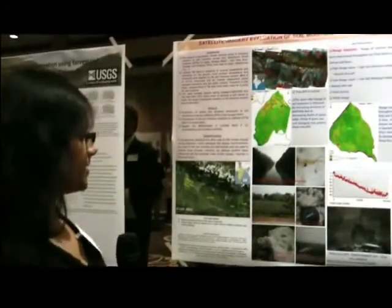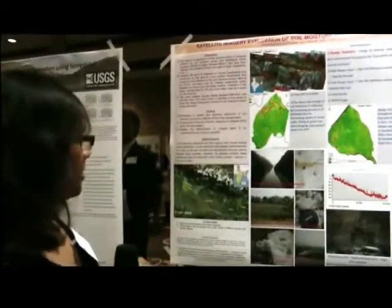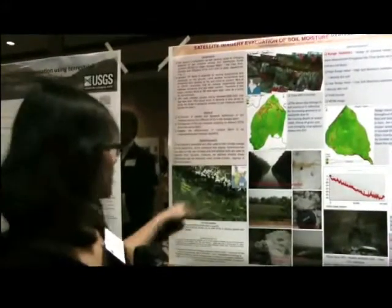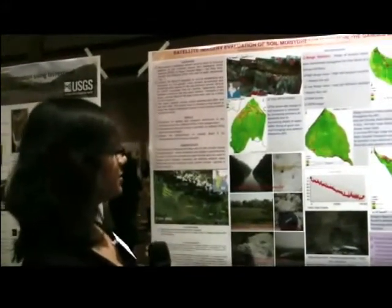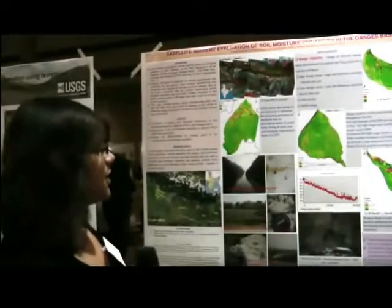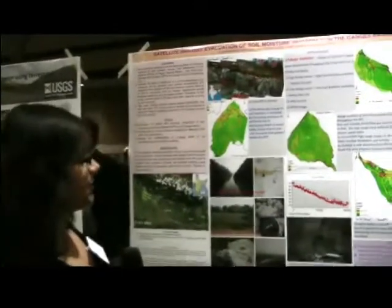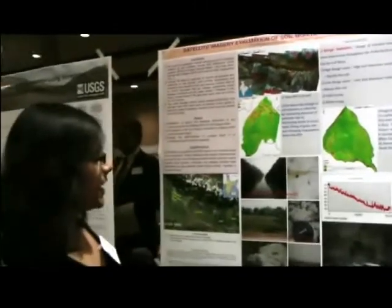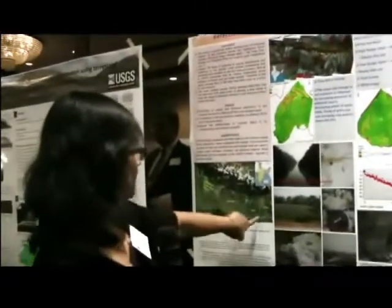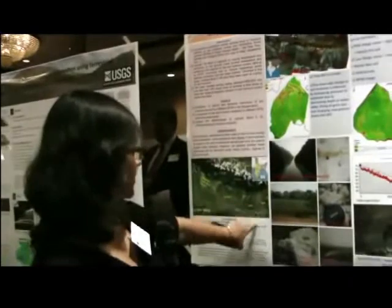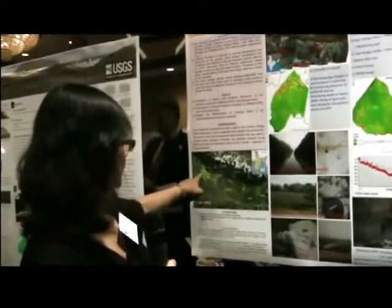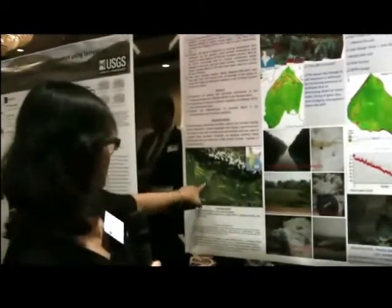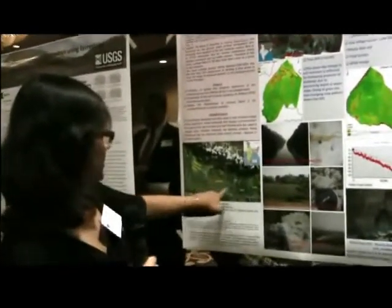My goal was to determine whether we can evaluate soil moisture using satellite images, which are free and easily available. I took four major sub-basins — Tista, Koshi, Gandak, and Ghagra-Rapti — which are situated side by side but have different geologic structures. Tista and Ghagra are similar in size, but Koshi and Gandak are in a part where the basin is still subsiding.